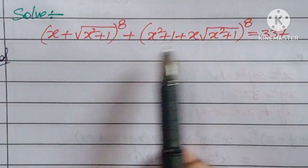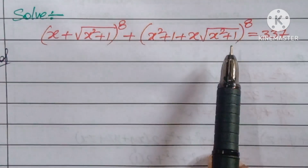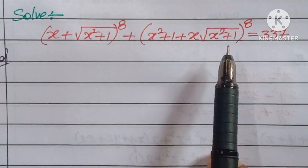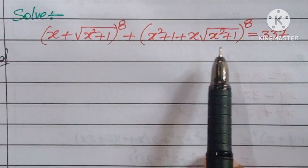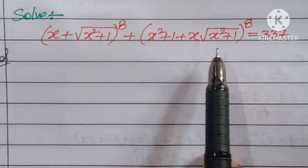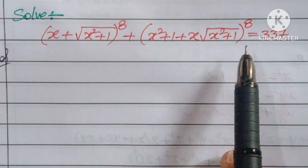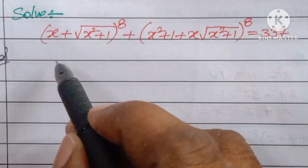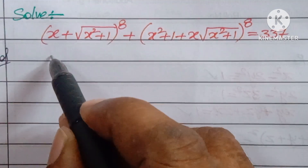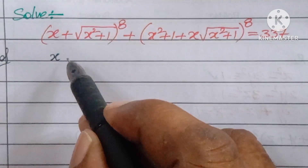The power given is 8, so direct expansion is very difficult. Substitution guessing is also not straightforward here, so we need a smarter approach.